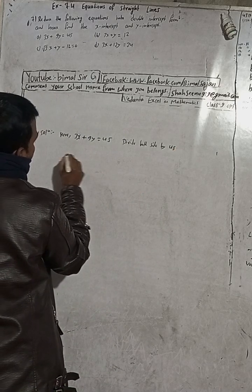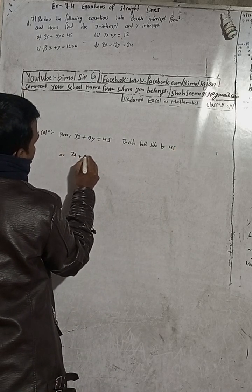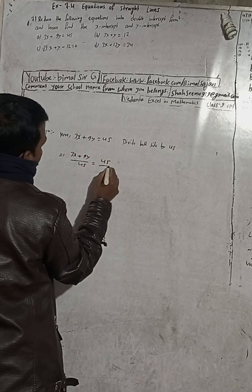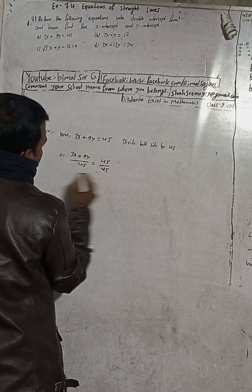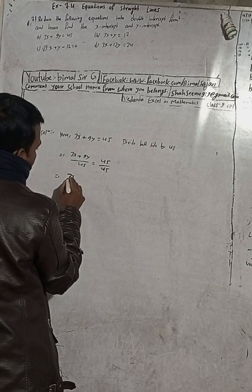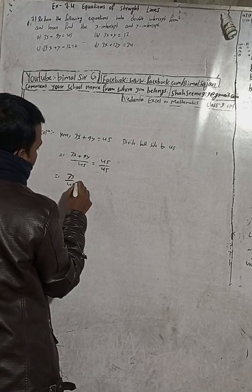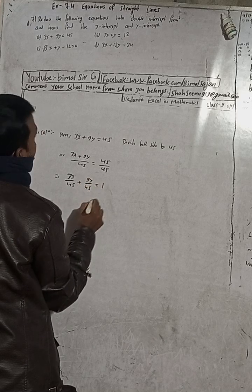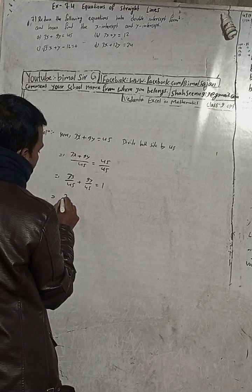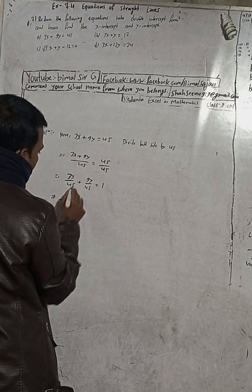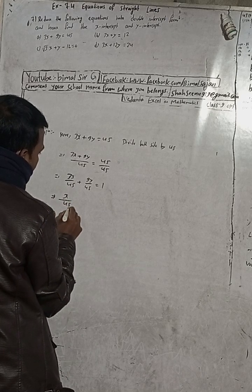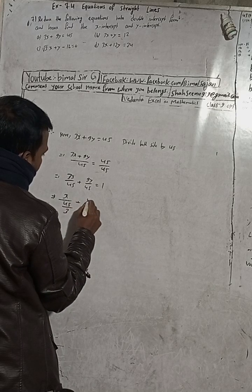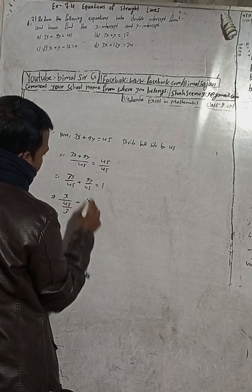Dividing both sides by 45: 3x plus 9y divided by 45 is equal to 45 divided by 45. When you separate it, this is 3x by 45 plus 9y by 45 is equal to 1. This implies x over (45/3) plus y over (45/9) equals 1.